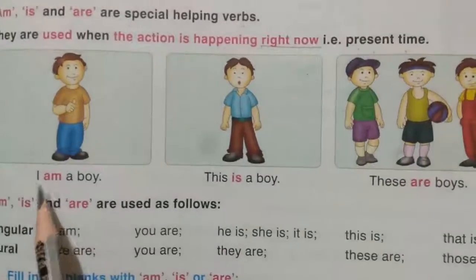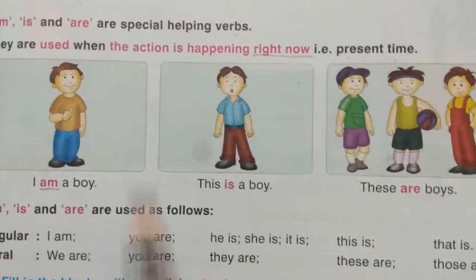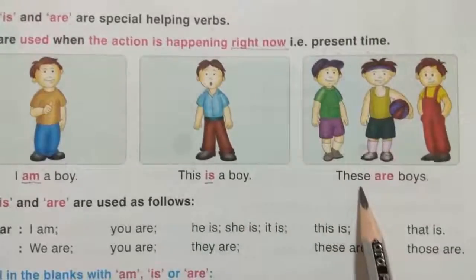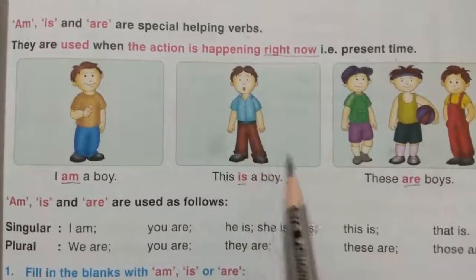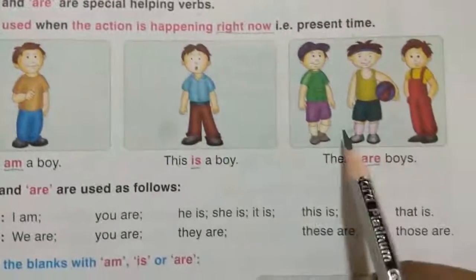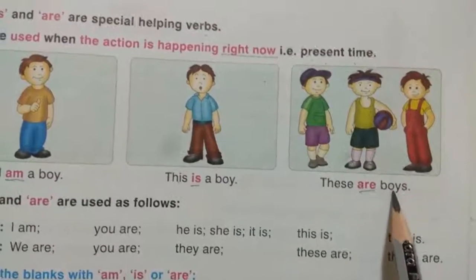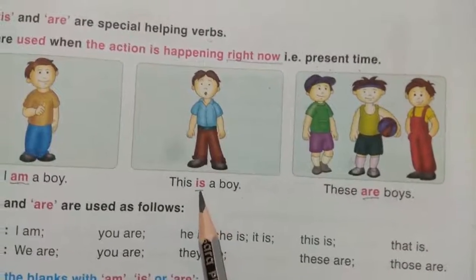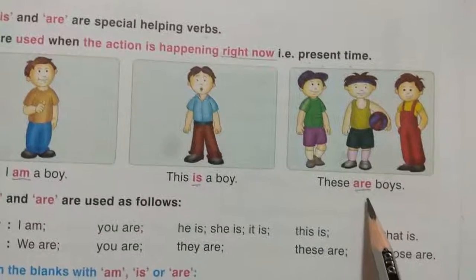See some examples. I am a boy. This is a boy. These are boys. So here you can see 'This is a boy' is singular — only one. And 'These are boys' is plural — many. So for singular we should use 'is', and for plural we should use 'are'.